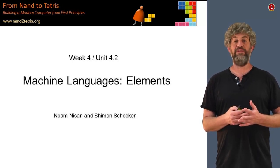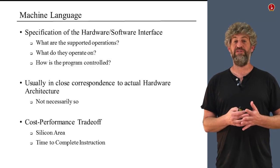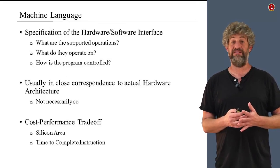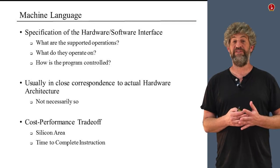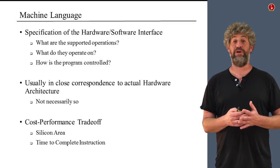The first important thing to remember is that the machine language is probably the most important interface in the whole world of computer science. It is the interface between hardware and software, as it is exactly the way that software can control the hardware.